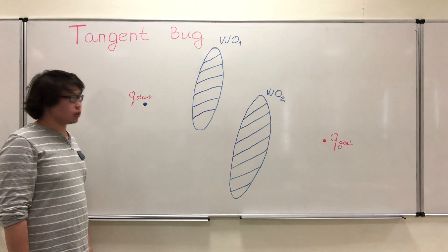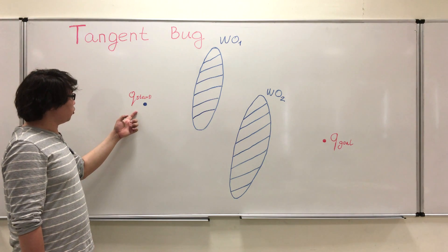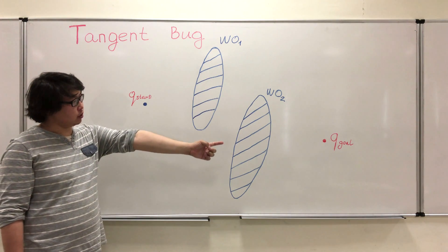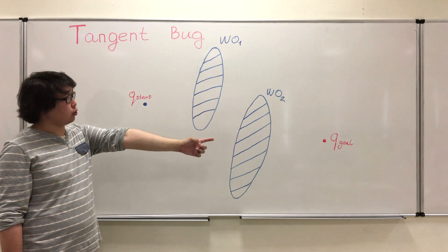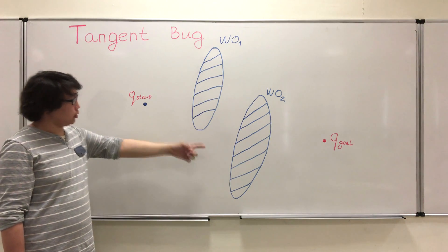We have the following assumptions. We have an initial point Q start, a final point Q goal where we have to go, and two obstacles, obstacle one and obstacle two.